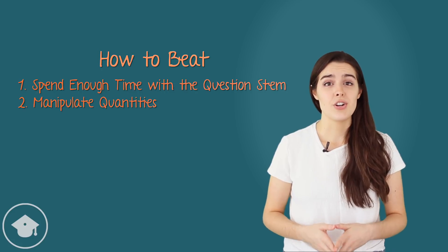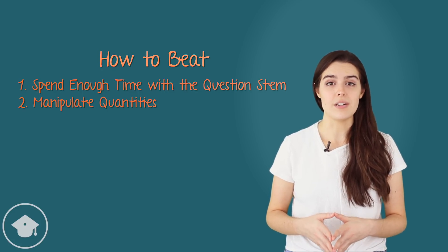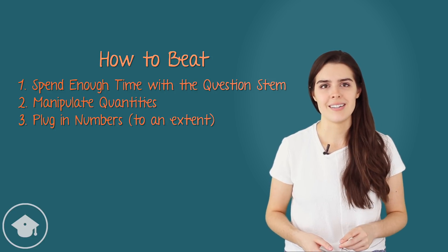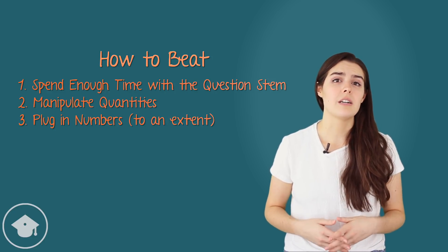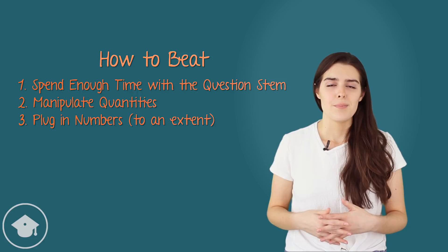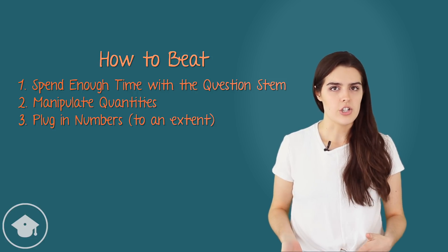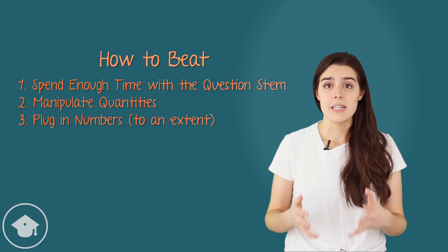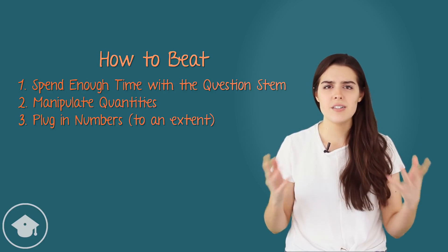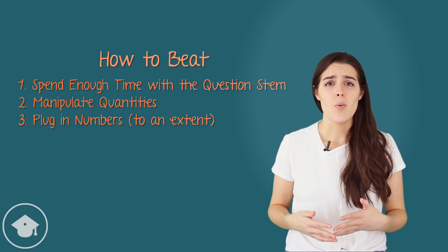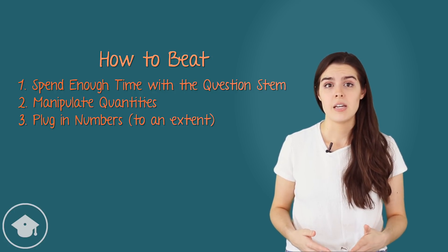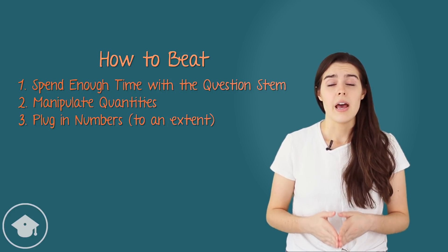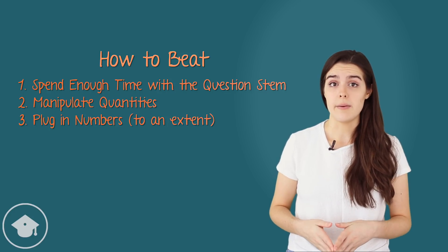Which leads us to the third step in beating quantitative comparison questions. Plug in numbers, to an extent. Test takers love to plug in numbers on quantitative comparison, but it's actually a pretty risky strategy. Most numbers aren't going to tell us much about the problem at hand, and many test takers end up plugging in 10 different numbers that tell them the same thing, while missing the one number that will tell them something different. This is why it's important to be selective about when we plug in numbers, and which numbers we choose to plug in.